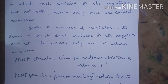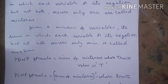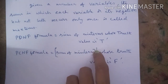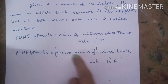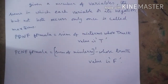Now the formula for PDNF: the sum of min terms whose truth value is T is called PDNF. The formula for PCNF: the sum of min terms (complement) whose truth value is F. These two are the formulas to solve the problems.